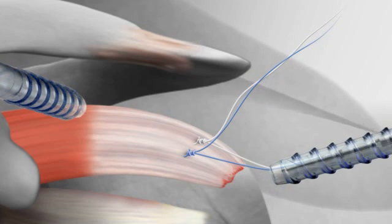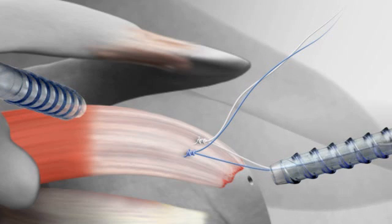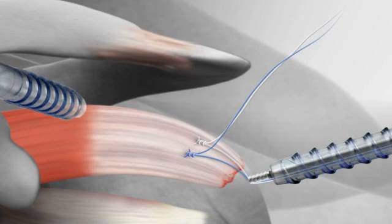The surgeon then creates two additional sockets laterally. Sutures passed previously are crossed and secured to the bone using knotless push lock anchors.